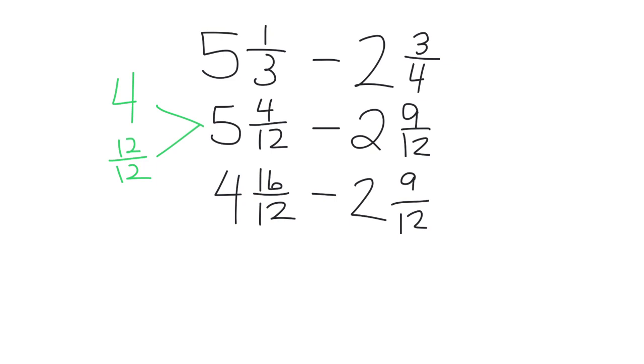So 4, let's see, 4 minus 2 is 2. And then 16 twelfths take away 9 twelfths is 7 twelfths. Same answer as with the chunking method. This is the regrouping method.